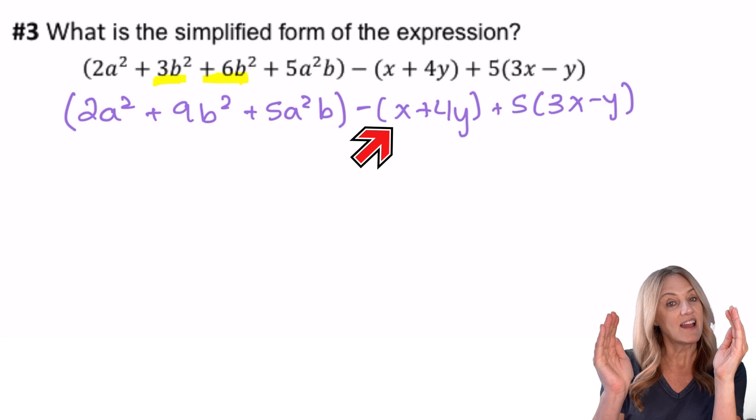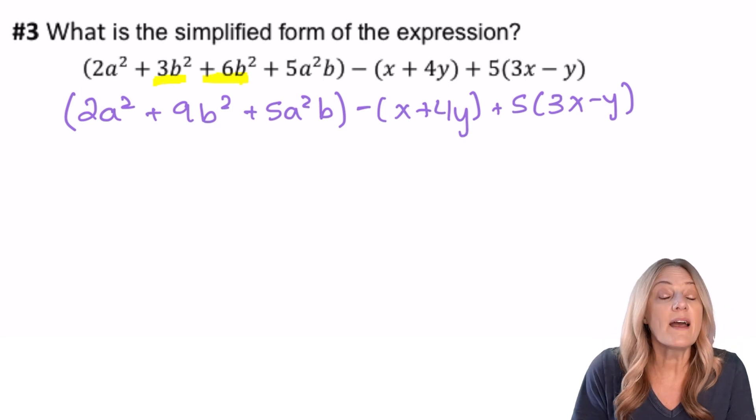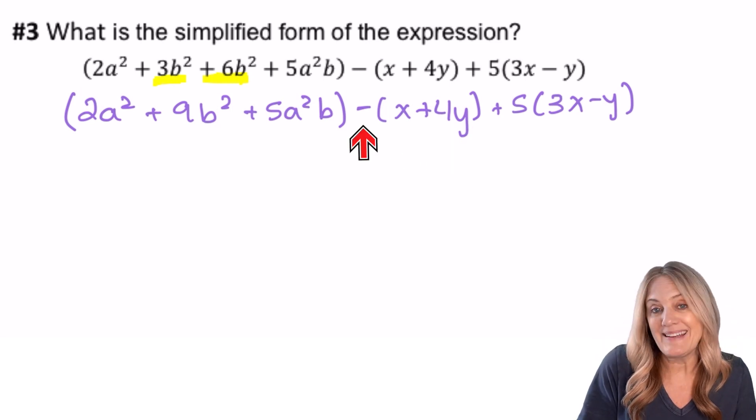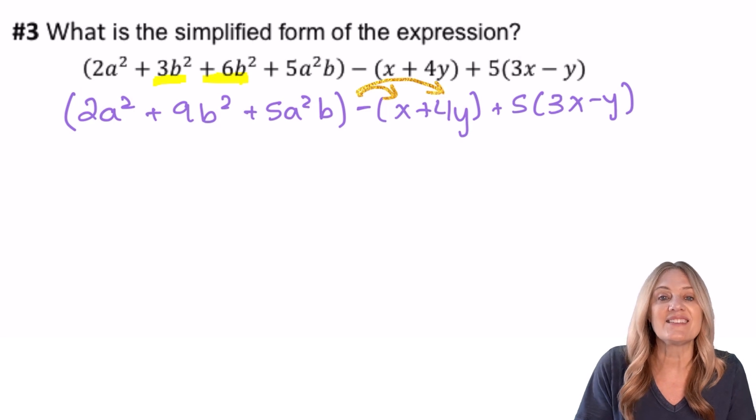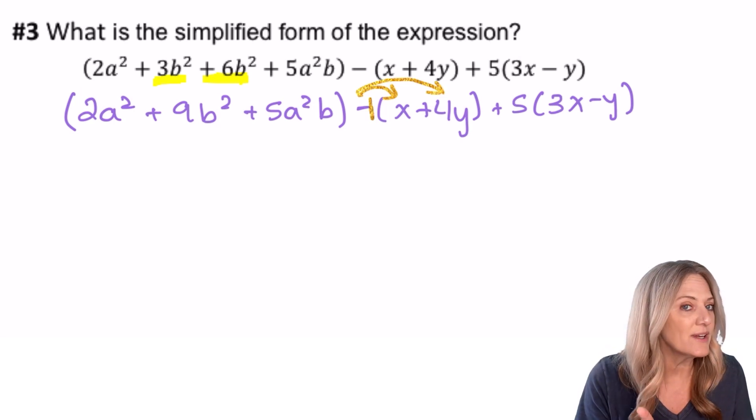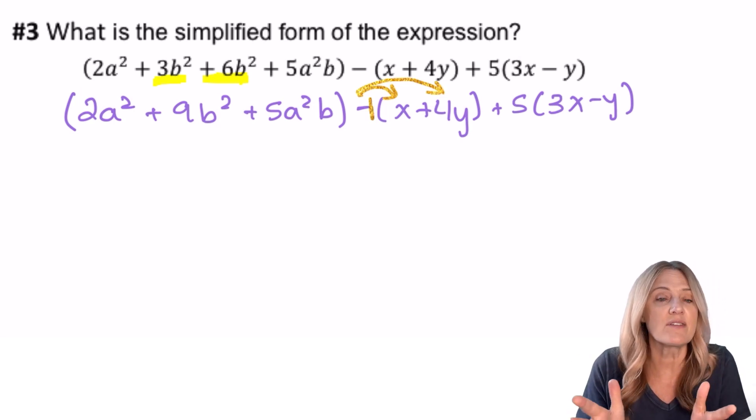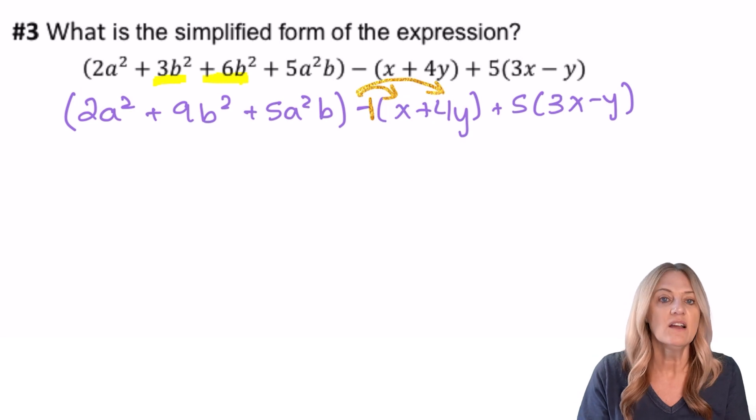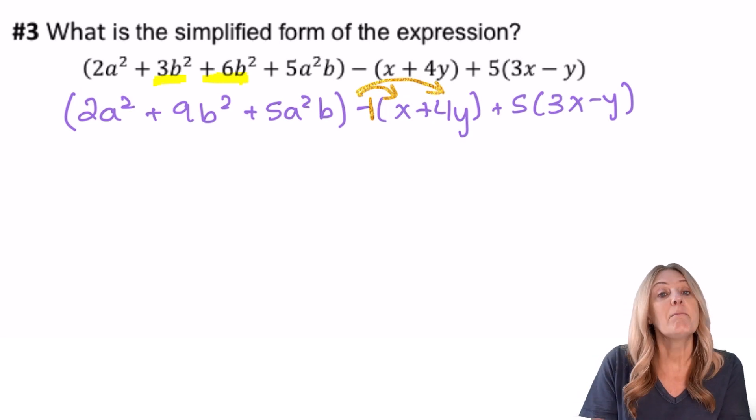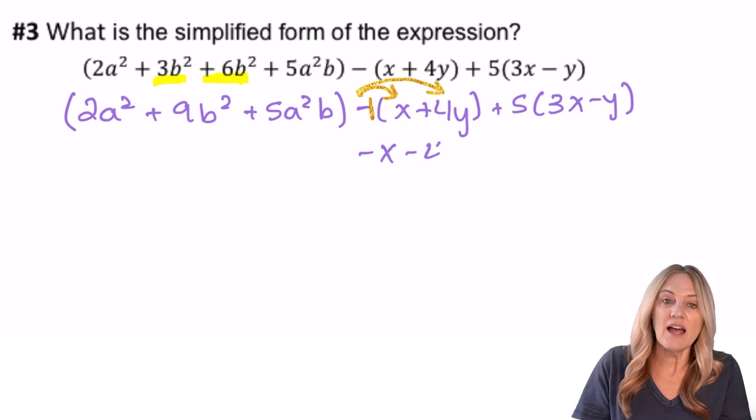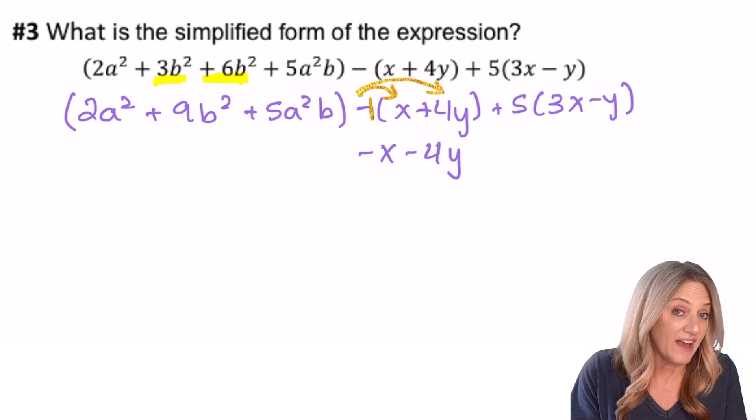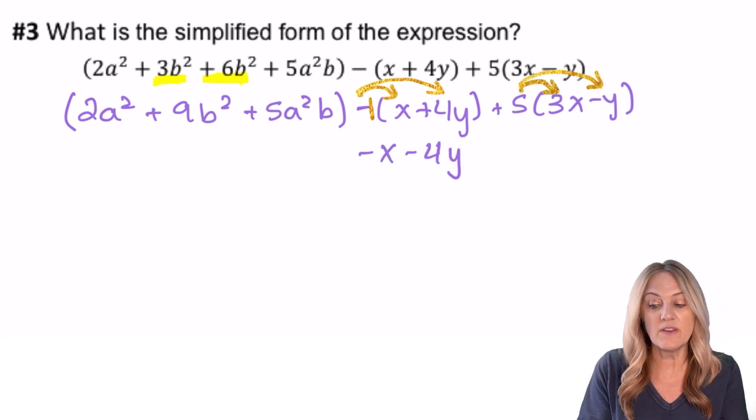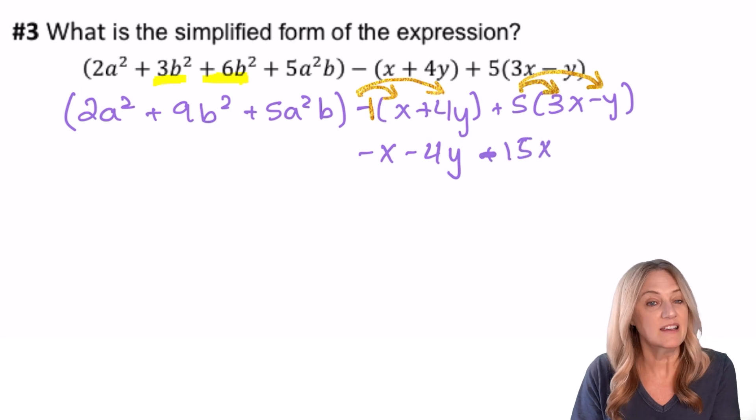In the next part of the expression, we have minus (x + 4y). Well, that means we have to distribute that minus sign. I like to think of it as a negative 1, so that I don't forget to distribute it to everything inside those parentheses. So we get −x − 4y. Likewise, we're going to distribute the 5 and get 15x − 5y.